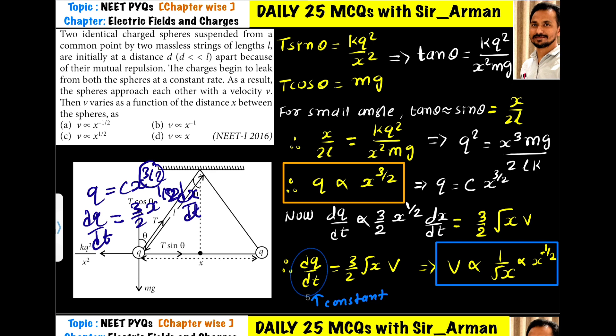dq/dt is constant because it is given in the question that charge leaks at a constant rate. So we can directly write v = (2/3)·(1/√x). This means v is proportional to 1/√x, which is nothing but x^(-1/2). So the correct option is option A.